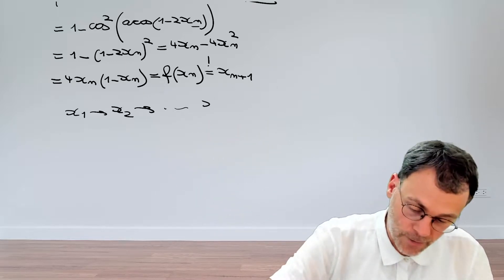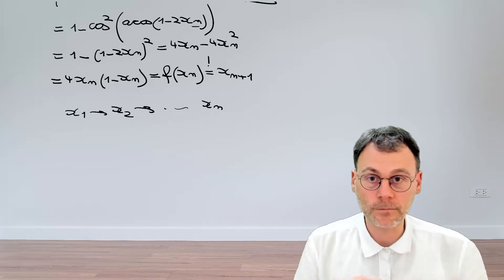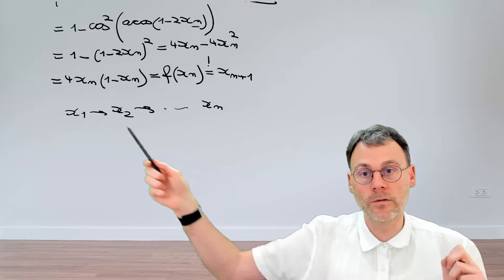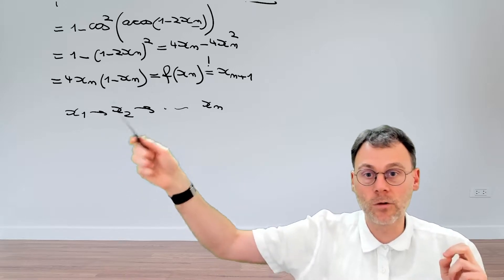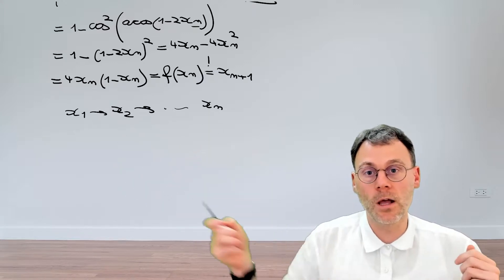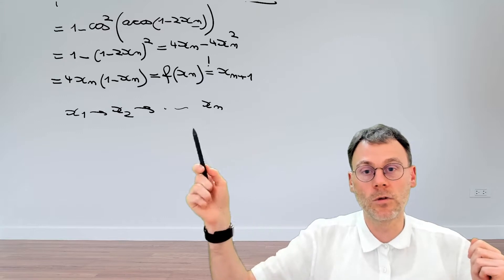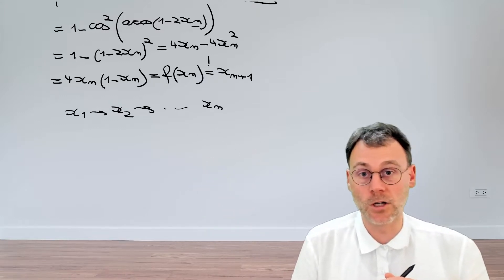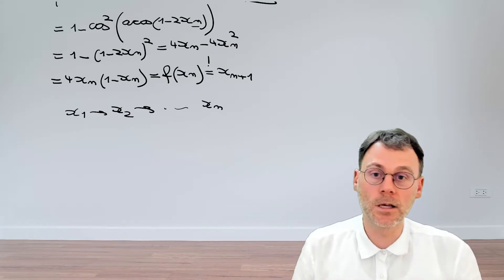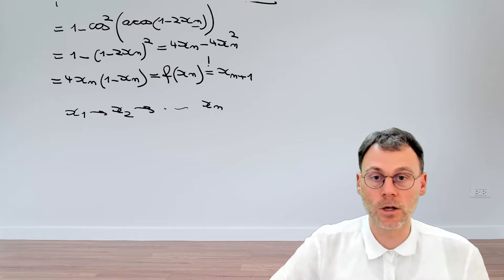If you keep applying the map many times, the small deviations in the beginning escalate. Here it seems we found a shortcut: we can skip all intermediate steps and go straight to the final result, so we don't need to worry about numerical accuracy for intermediate steps. So perhaps you've found a way to solve the problem of sensitivity to initial conditions — but obviously that's not true. Can you look at this formula and see why?